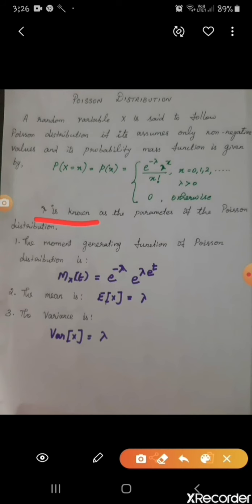Next, the moment generating function, mean and variance we will calculate for the Poisson distribution. We have already seen that the moment generating function M_x(t) is given by e^(−λ) · e^(λ·e^t). The mean and variance of the Poisson distribution are both equal to λ.